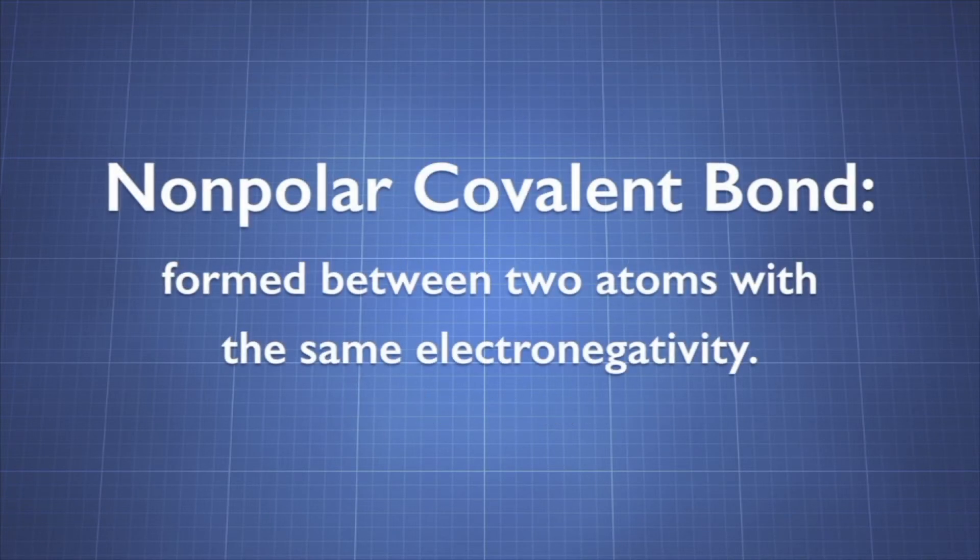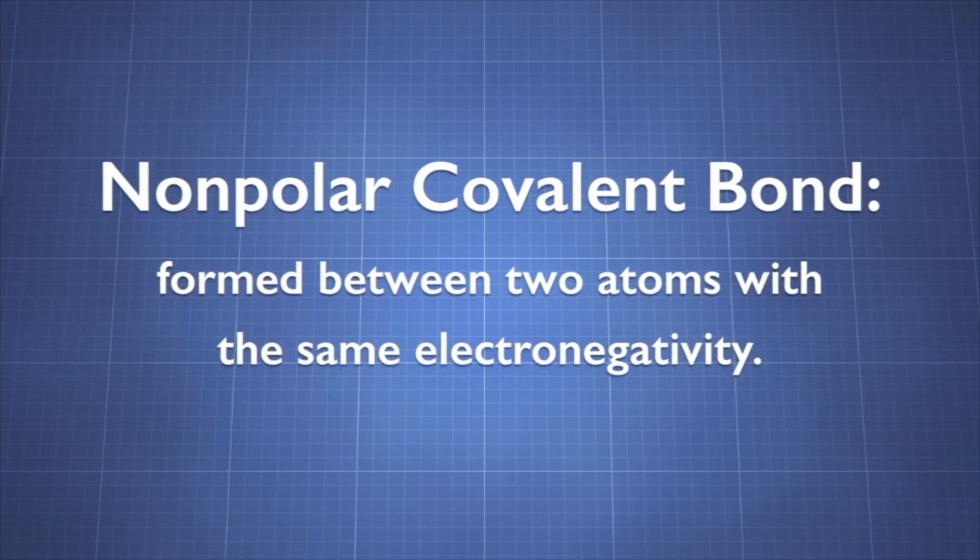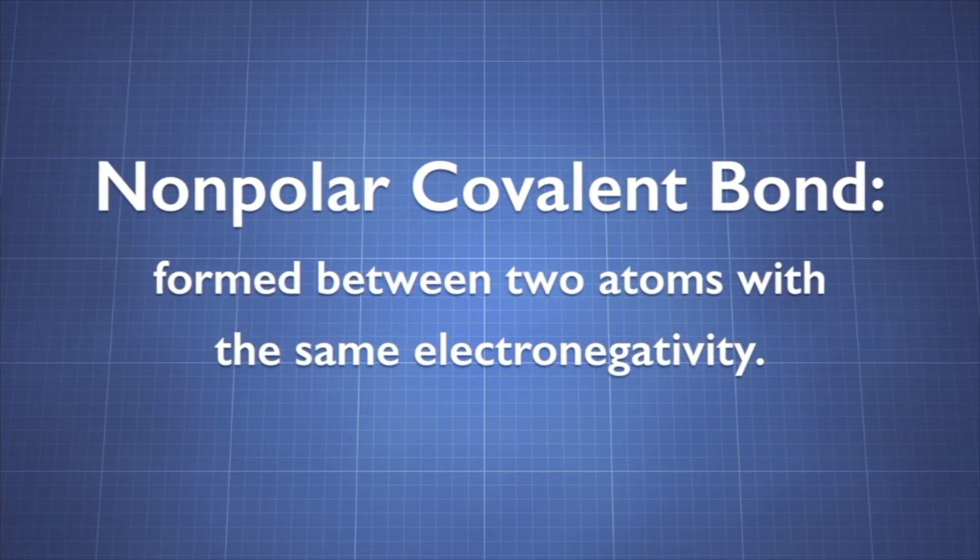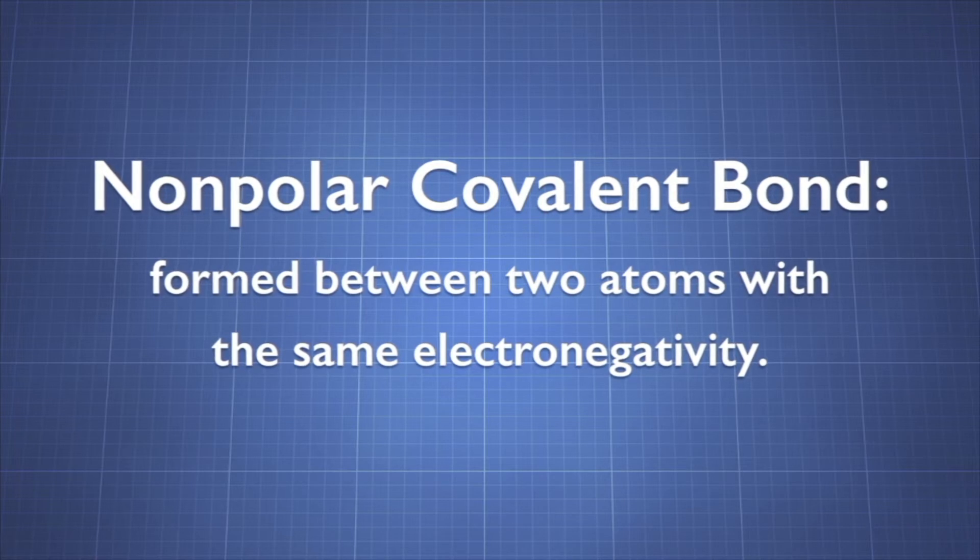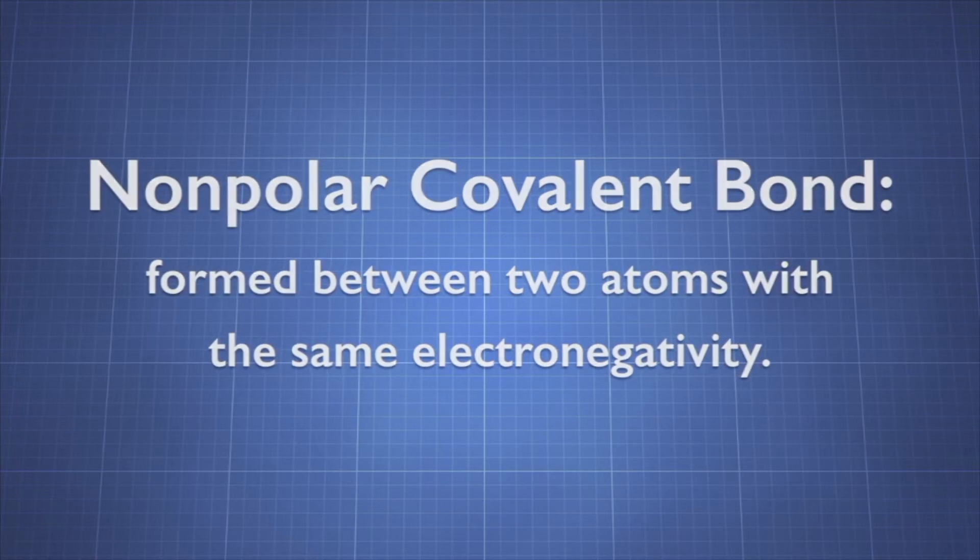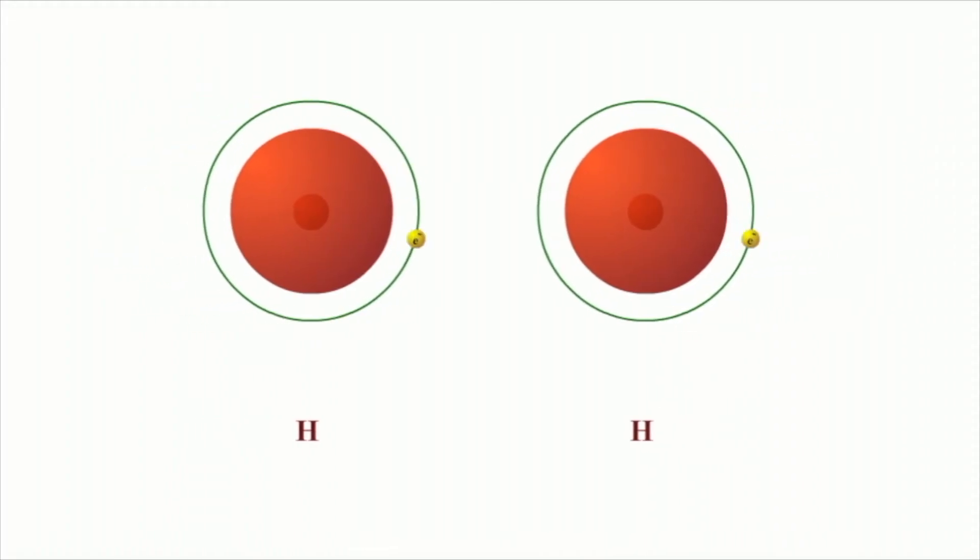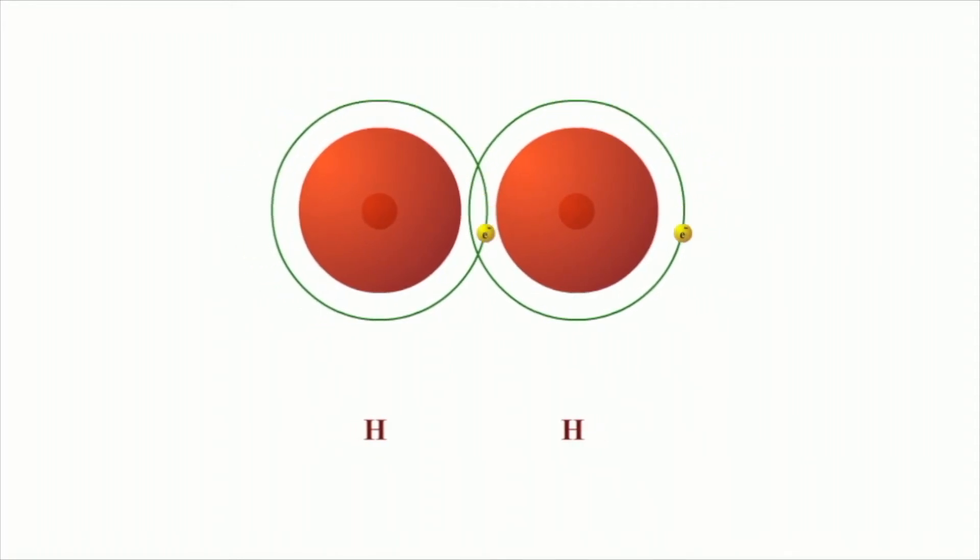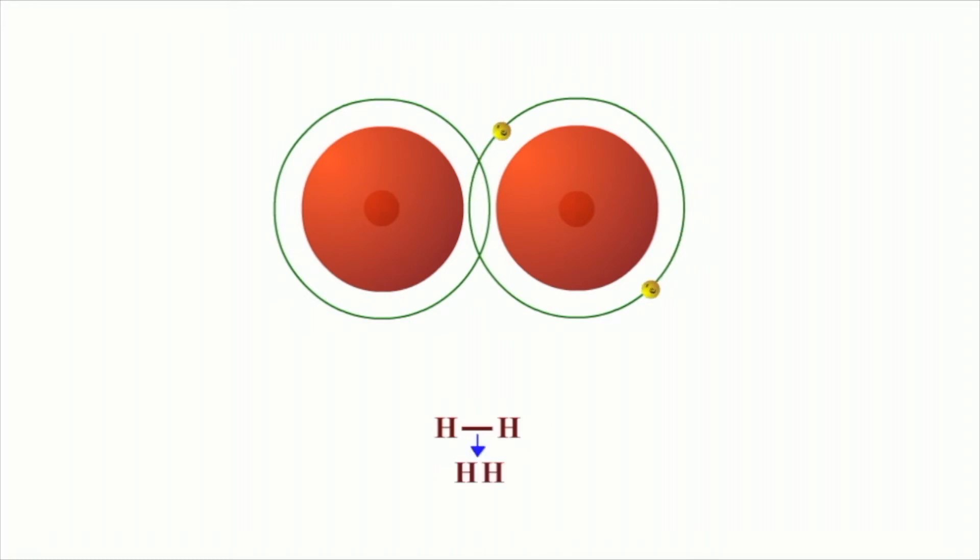A nonpolar covalent bond is formed between two atoms that have the same electronegativity. As a result, the shared electrons are equally distributed between the atoms. Some diatomic molecules are nonpolar. These are molecules formed out of two atoms of the same element, such as hydrogen. Diatomic molecules of gaseous elements are common. Diatomic molecules of oxygen are part of the air we breathe.